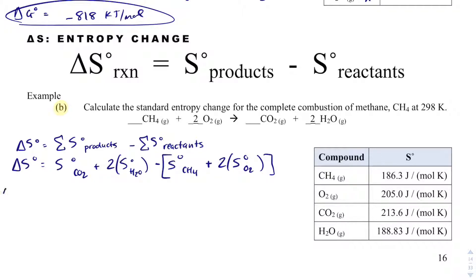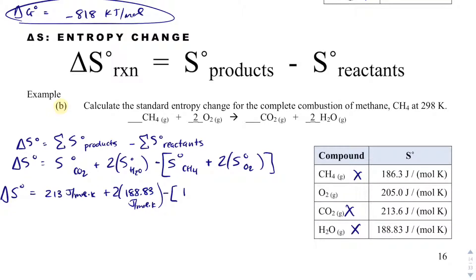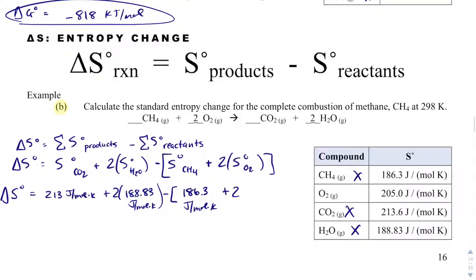And then now I just need to add up my products and my reactants. So the entropy for CO2 is going to be 213 joules divided by moles times Kelvin plus 2 times the entropy of water, which is 188.83 joules per mole Kelvin minus the entropy of CH4, which is 186.3 joules per mole Kelvin plus 2 times the entropy of O2, which is 205.0 joules per mole Kelvin.